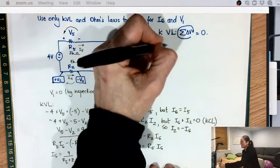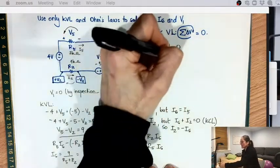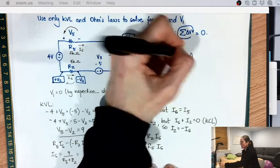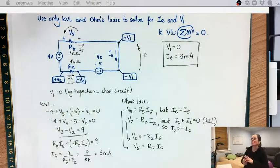So now I know V1 equals 0, I6 equals 3 milliamps. I may have messed up a sign or two. So that's that.